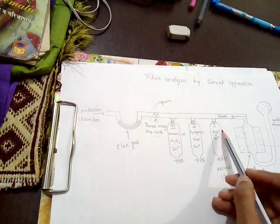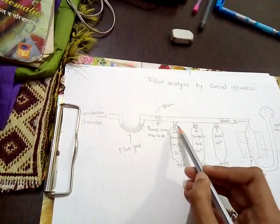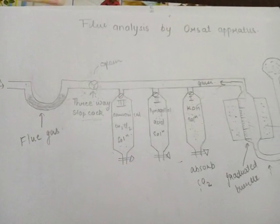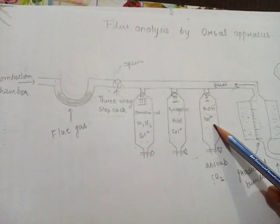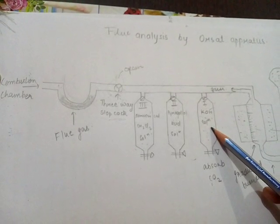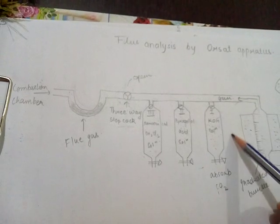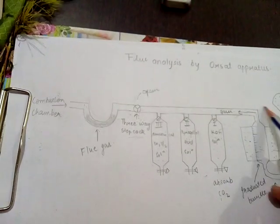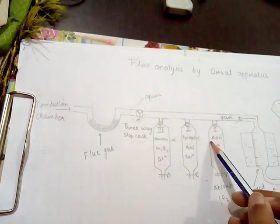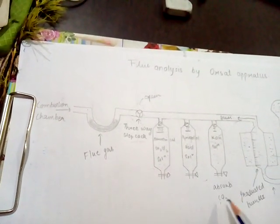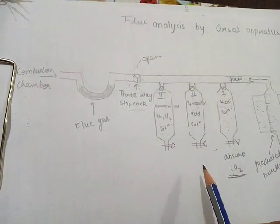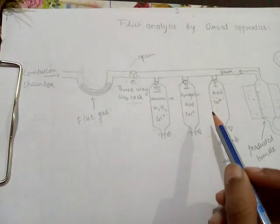All three absorption bulbs have stop cocks, but these are closed at this time. First, the stopcock of the absorption bulb containing potassium hydroxide solution is opened. The gas passes into the bulb, raising the water level in the burette. The gas comes into contact with the potassium hydroxide solution, which absorbs the CO2. This same process is repeated several times.